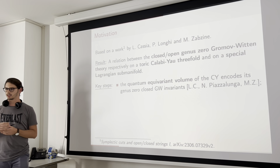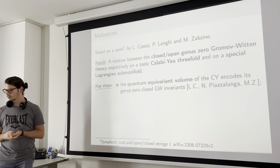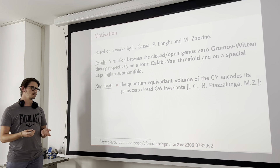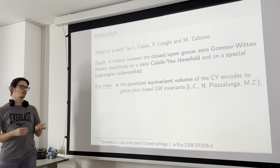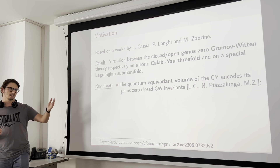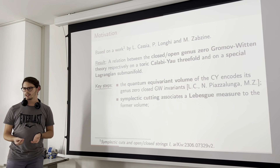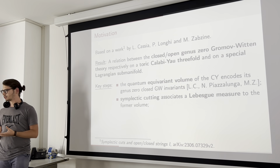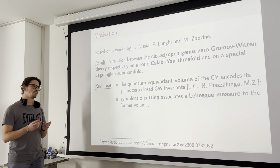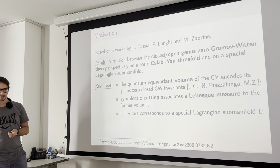We are going to review some key steps shown in this article and other previous articles by the same authors. The first is the fact that the quantum equivariant volume of our Calabi-Yau manifold, which we will briefly review, encodes the genus zero closed Gromov-Witten invariants. This has been claimed in a paper by Cassia and Zabzin together with Nicolo Piazzalunga. Next, a relatively new symplectic construction called symplectic cutting is used to provide some sort of Lebesgue measure to the quantum equivariant volume of the whole manifold.